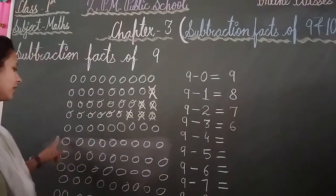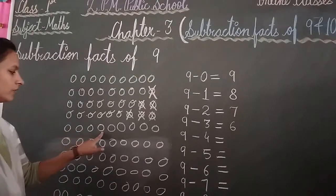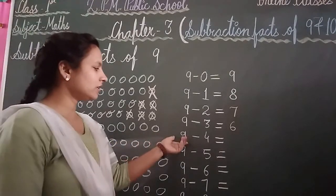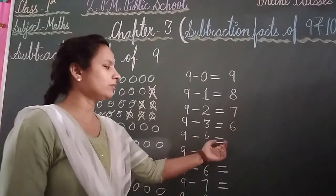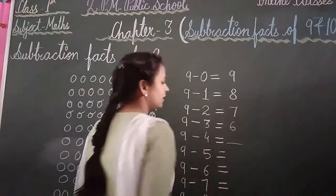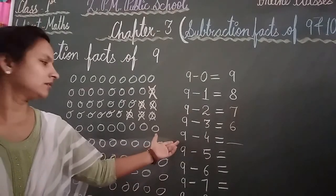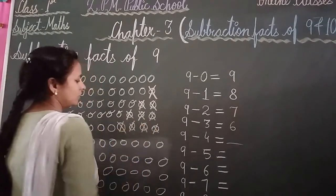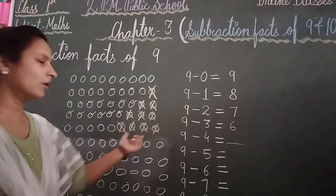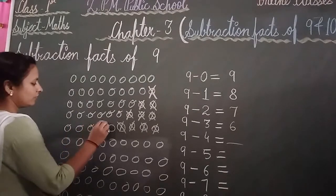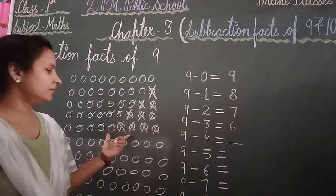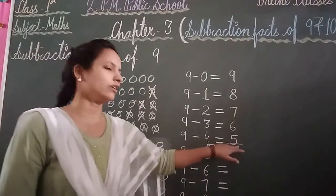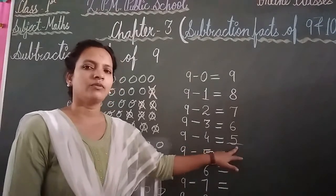Again draw your 9 balls: 1, 2, 3, 4, 5, 6, 7, 8 and 9. Write your digit: 9 minus 4 equal to. Cross out 4 balls: 1, 2, 3, 4. Count the balls left: 1, 2, 3, 4, 5. How many balls are left? 5. 9 minus 4 equal to 5. The answer is 5.